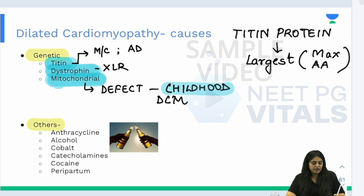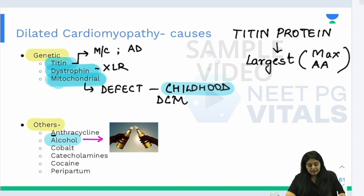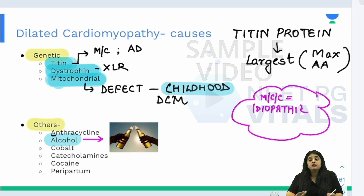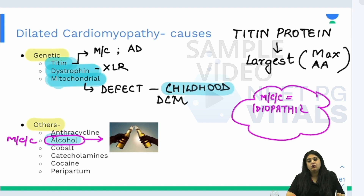Regarding other causes, listed alphabetically: anthracycline drugs, and alcohol — one of the most common identifiable causes of DCM. If asked the most common cause overall, the answer is idiopathic, as more than half of cases are idiopathic. If idiopathic is not in the options, then select alcohol.